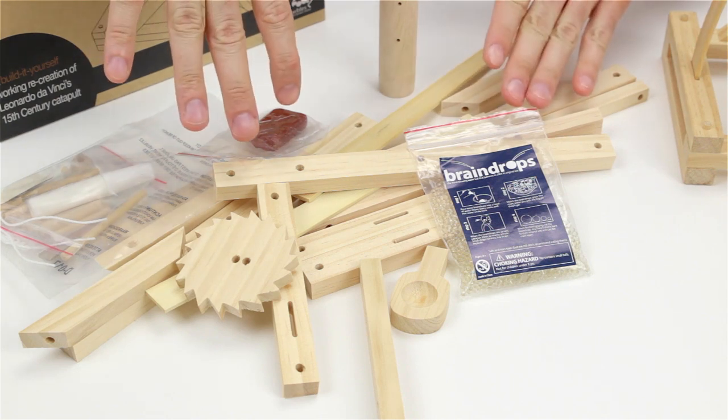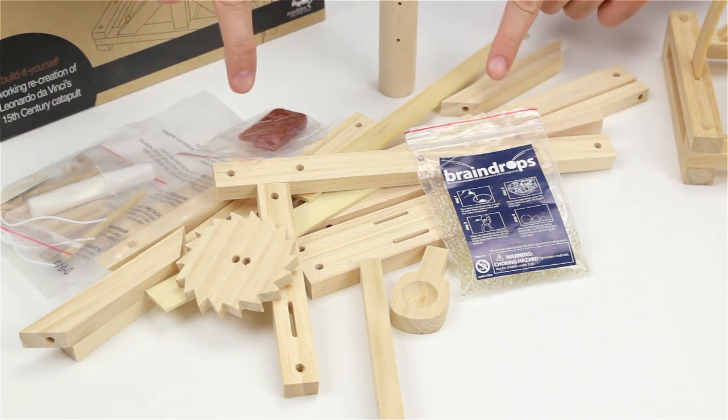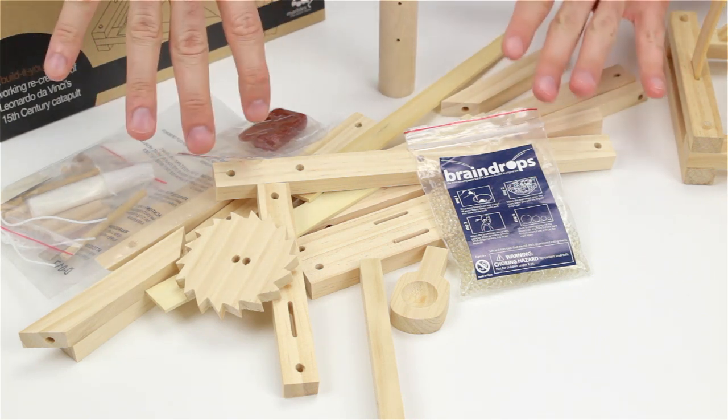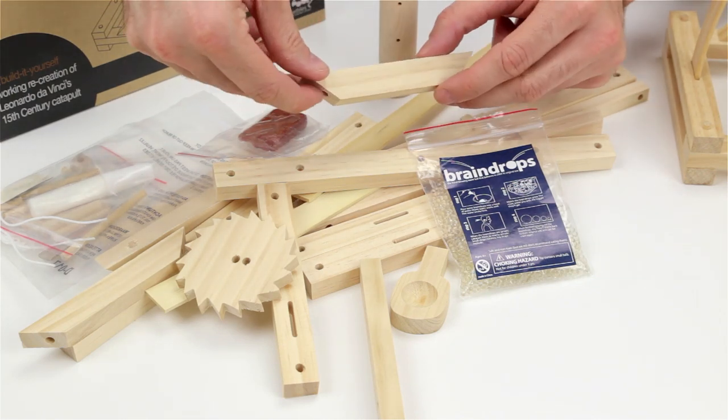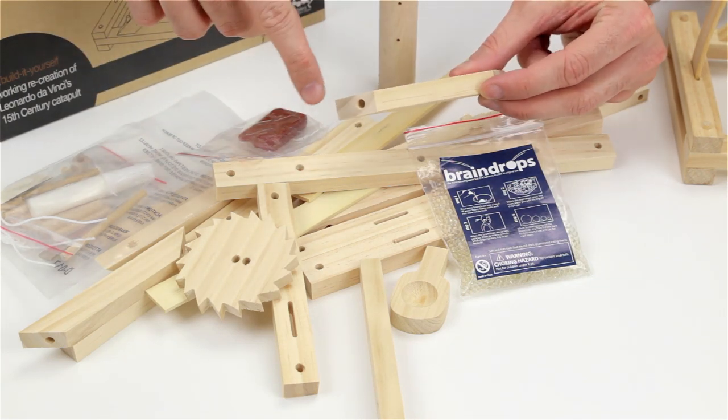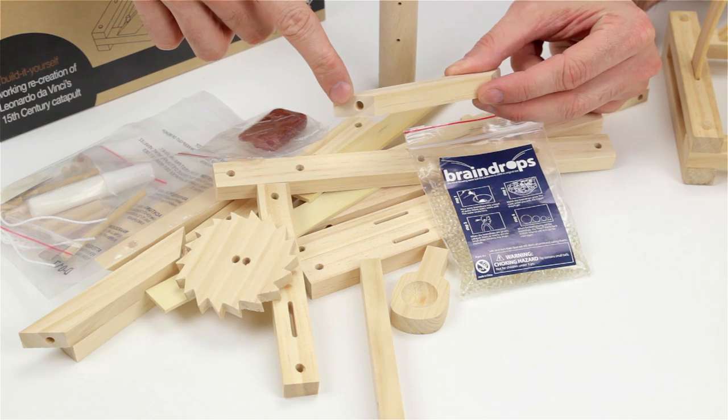It comes with all of the parts you see here, which includes everything you need to make a working catapult. The pieces are pre-cut and ready to be assembled, and all the parts are pegged for extra strength.